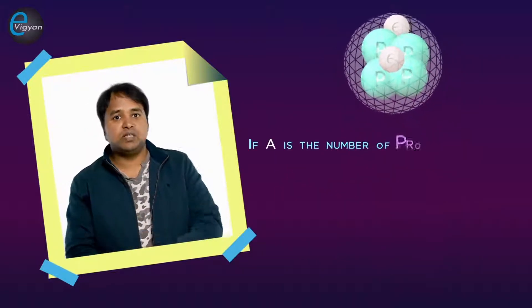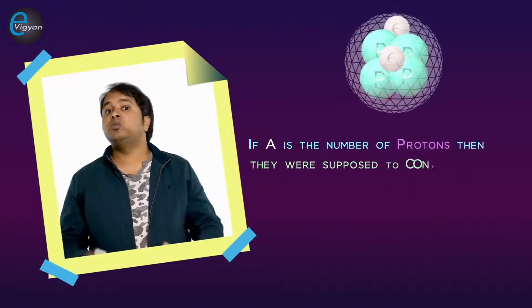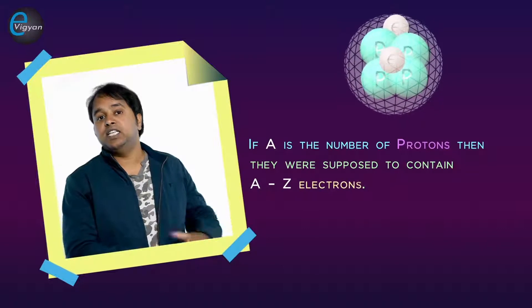That is, if A is the number of protons, then they were supposed to contain A minus Z electrons. These electrons would contribute only a small amount to the mass of the nucleus, but together with the protons, they would make the net charge equal to Z units, as required.